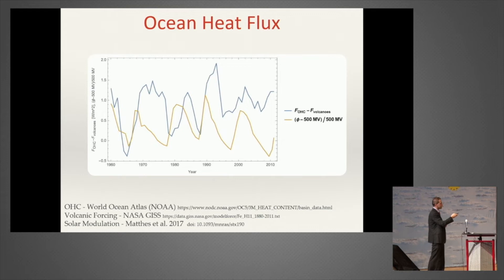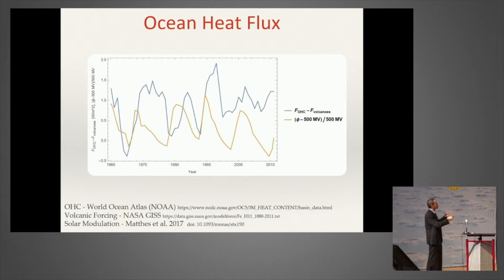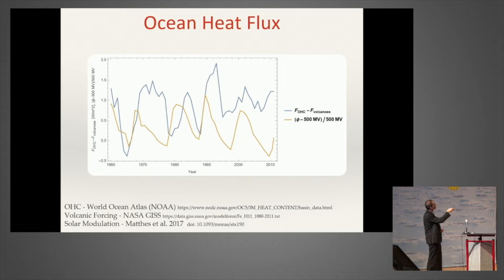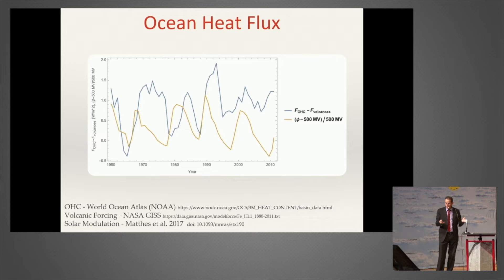You can also see this with ocean heat content data. There are floats with temperature gauges measuring temperature at different depths, so you can see how much heat the ocean stores. When you differentiate it, you find that every time the sun was more active, heat was going into the oceans and vice versa. So another independent record shows you exactly the same—the sun has a large effect on climate.